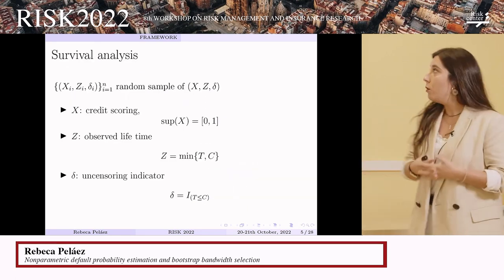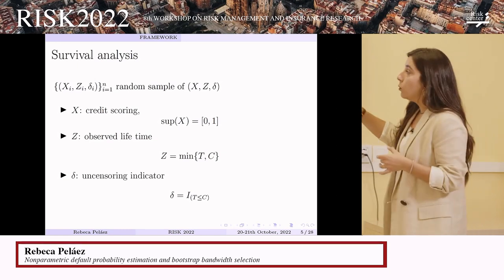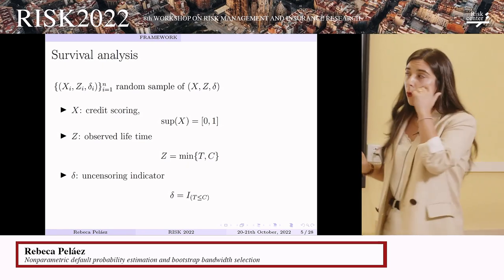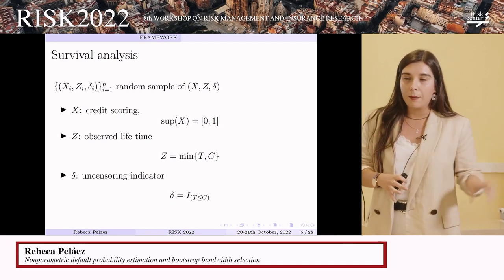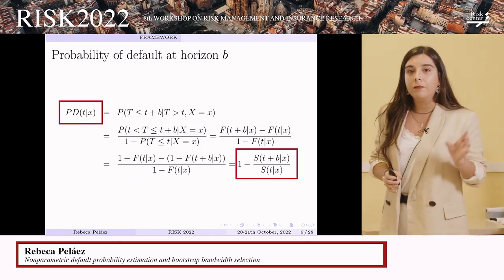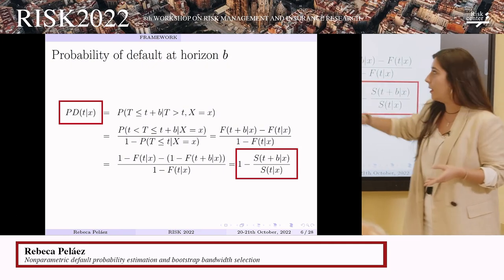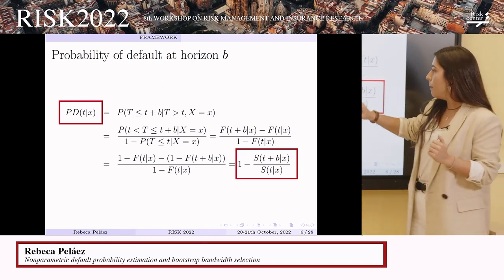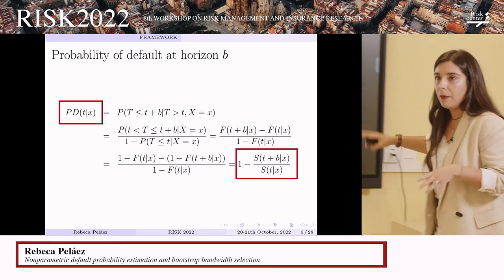The variables involved are: the credit scoring x, which measures the solvency of the client; the observed lifetime, which equals t if the default is observed or equals c (time to censoring) if the data is censored; and a censoring indicator. This structure has an analogy with survival analysis problems. For this reason, we wrote the probability of default in terms of the conditional survival function: the probability of a borrower with credit scoring x, who has paid their credit up to time t, stopping payment before t plus b, is written as 1 minus the quotient between the survival functions at times t+b and t, where b is the default horizon fixed by the bank.